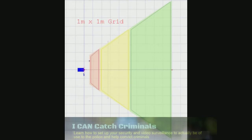Anything in this red zone is considered identification quality. In the yellow zone is recognition quality — that means if we know the person, we'd recognise them. Whereas identification means if we don't know the person, we should have enough detail to prove who they are. In the green zone we can just observe their behaviours and what they're doing. So we want to be working in these two zones for what a lot of people want.